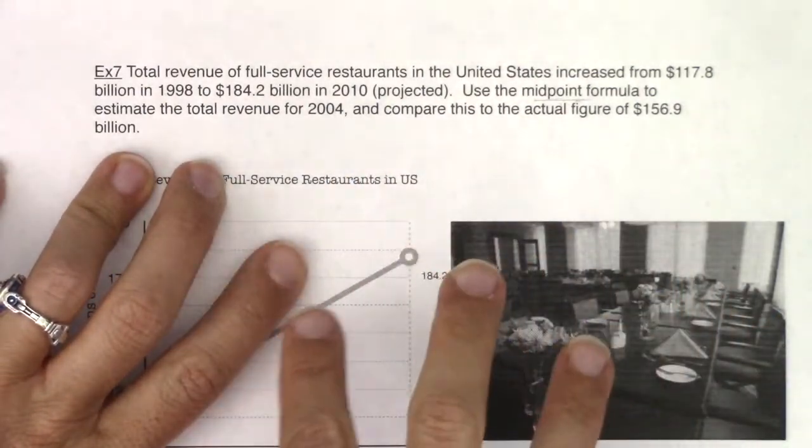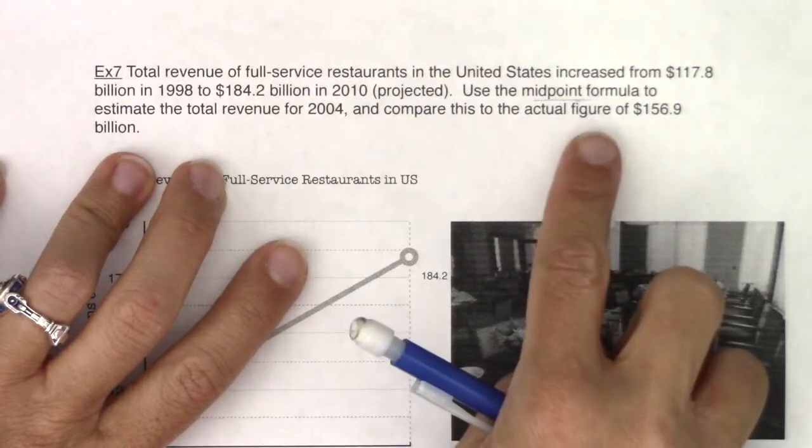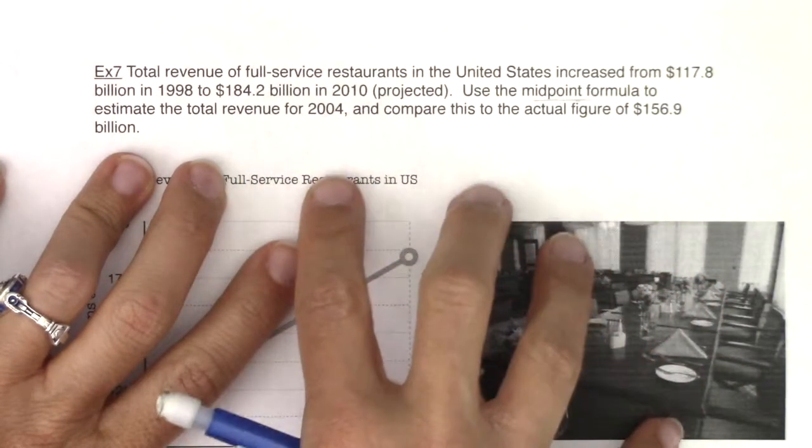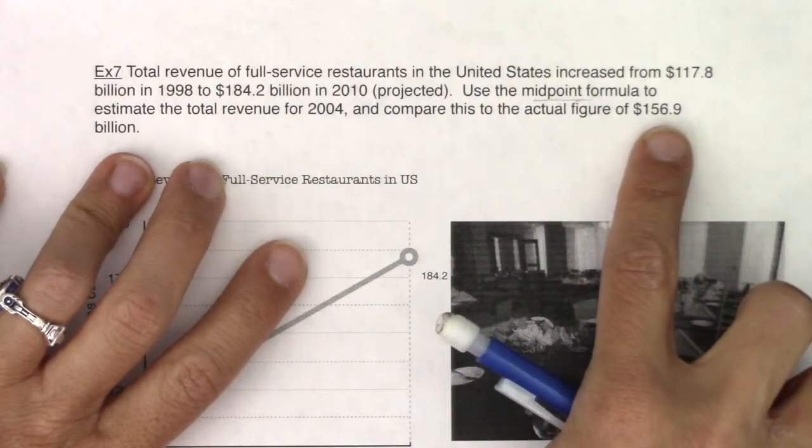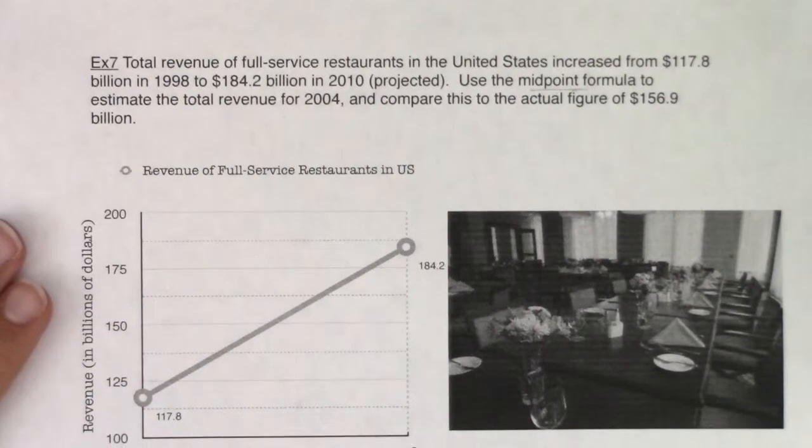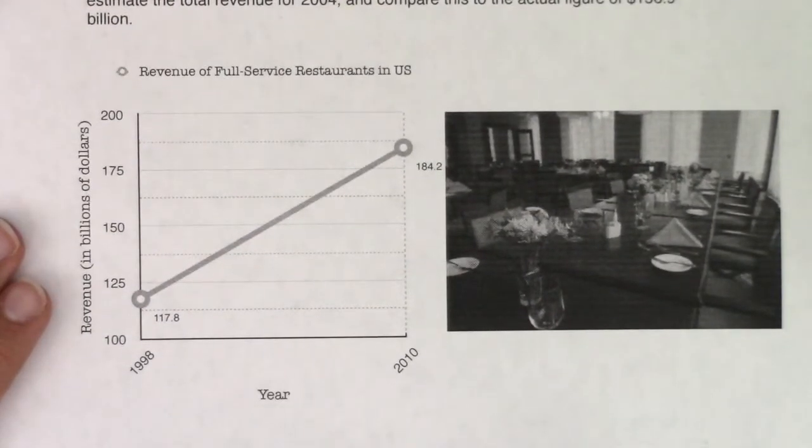When I get my midpoint, I'm going to compare the number because I want to estimate the total revenue in 2004. I'm going to get that number and compare it to $156.9. Let's take a look. I have to move this up so I can get the graph in view. We're going to be using the midpoint formula on this.